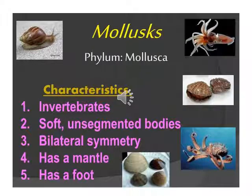Phylum Mollusca is the second largest phylum of the Animalia group. As you can see in the pictures, they have soft bodies covered by a shell made of calcium carbonate to protect from predators. They are invertebrates — they do not have a vertebral column. They have a soft body on the inside with a shell covering on the outside.